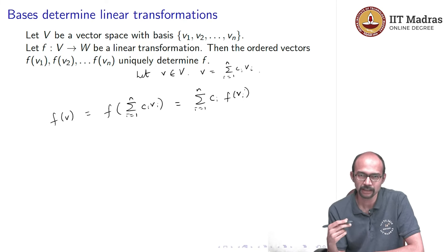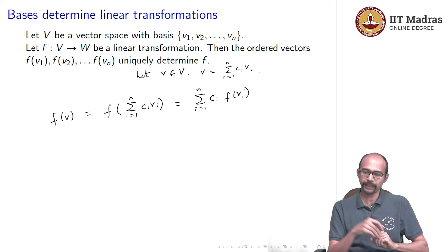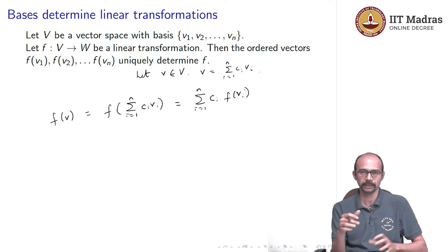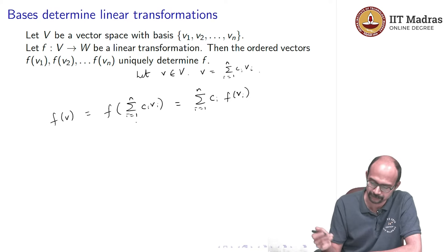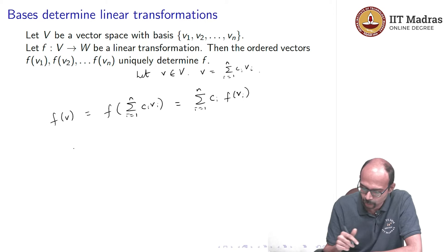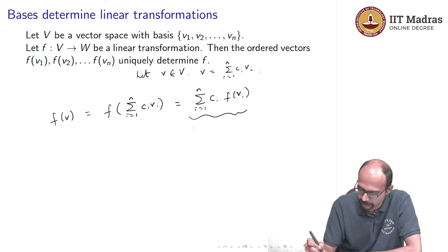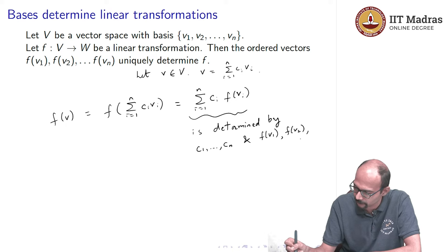We apply linearity sequentially — first to vn, then vn−1, and so on — pulling sums and scalars outside f. So f(v) is completely determined by the values f(v1), ..., f(vn). An ordered basis determines the linear transformation entirely.